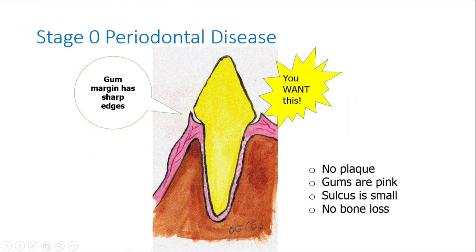There are 5 stages of periodontal disease and this is stage 0. This is the stage that you and your pet want to have all the time. Stage 0 is where the gums still have really nice sharp margins. There is no plaque, the gums are pink, the sulcus is very small, and there is no bone loss.